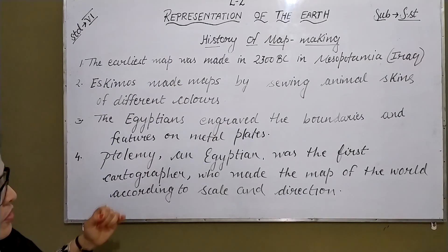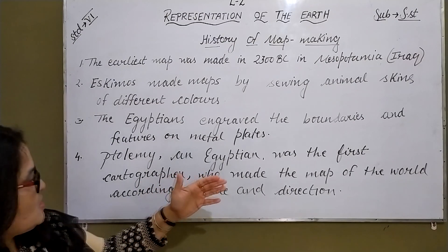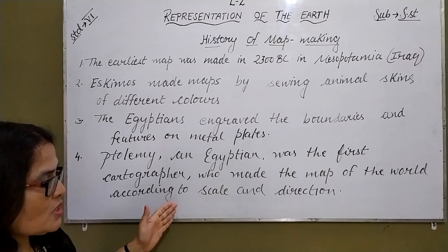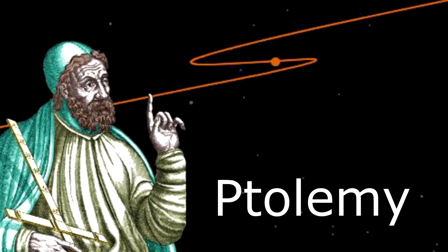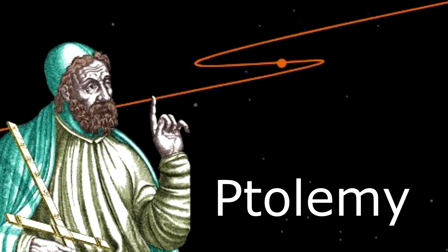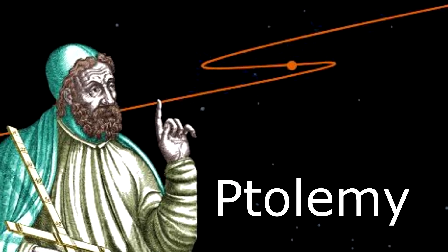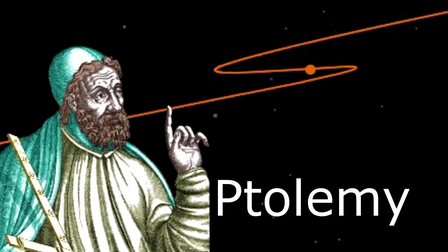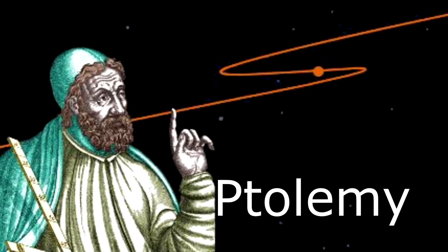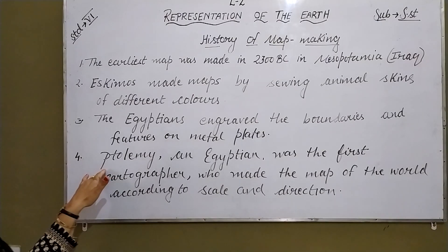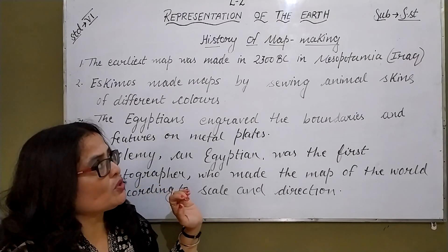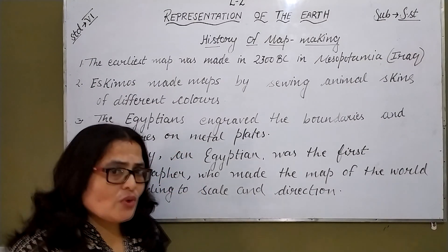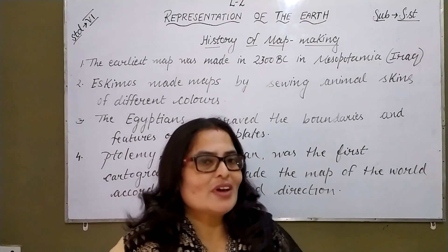Ptolemy, an Egyptian, was the first cartographer who made a map of the world according to scale and direction, and he is also known as the father of map making. He was also the first person to state that the earth is spherical in shape. I think you can easily understand about the map and the history of map making. If you have any query, you can ask me. Thank you and have a nice day.